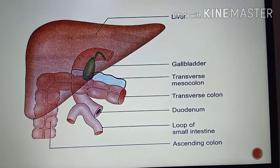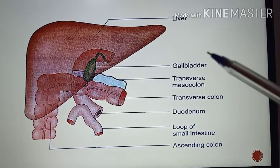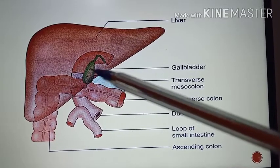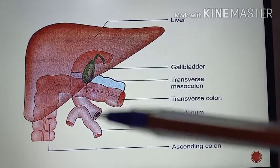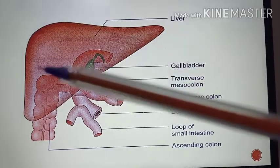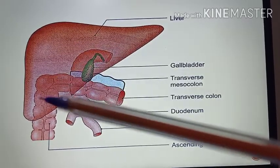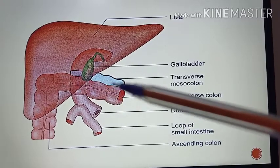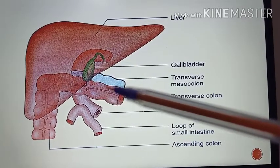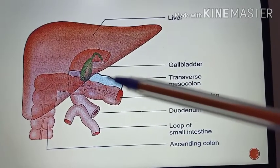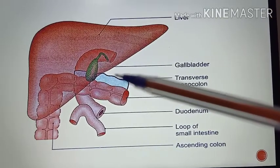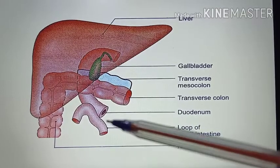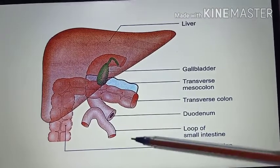Coming to the anterior relations, you have the fundus as well as the body of the gallbladder, then the right lobe of the liver, and also the transverse colon. The bluish structure is the transverse mesocolon, and also a few coils of the jejunum.